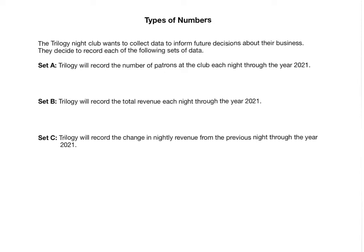Before we continue with the study of input-output rules, we need to look at different types of numbers that we will be using in this course. Just like a literary novel, mathematics has a setting, and in order for us to be able to do algebra, we need to know where we're doing the algebra. A big part of the setting of this course is the type of numbers that we use. Here we first have an example to give you an idea why there are different types of numbers, and then we'll get into classifying the different types of numbers that we use in this course.